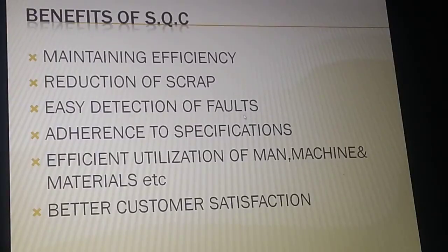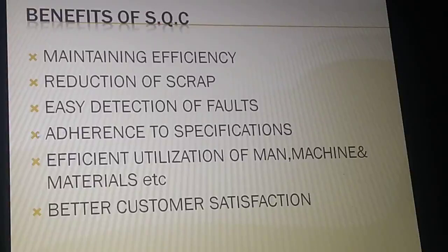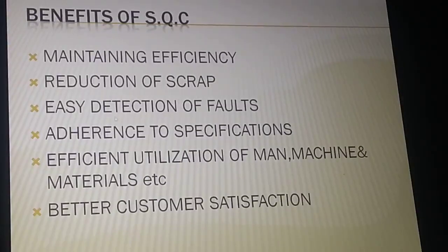Third, easy detection of faults: when we study the tools of statistical quality control, we study control charts such as the x-bar chart, R chart, p chart, and c chart. By using these charts, points that fall above the upper control limit or below the lower control limit indicate faults, so faults can be easily detected by making graphs using these control charts, which we will study in the next lecture.